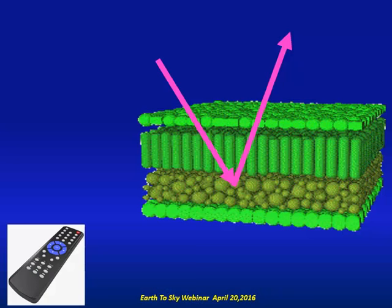Relative to visible spectral regions such as the blue, green, or red spectral region, vegetation canopies are typically highly reflective in another spectral region called the near-infrared spectral region. That's the same invisible spectral region that most remote control devices are using — for example, your television remote control or the remote control to turn on your DVD player.